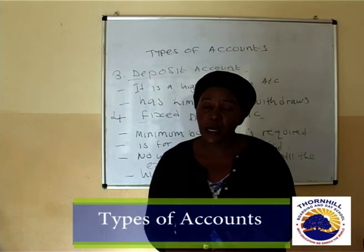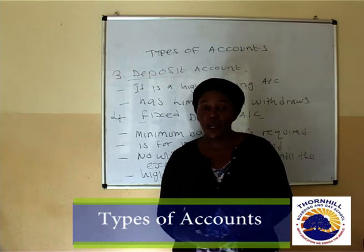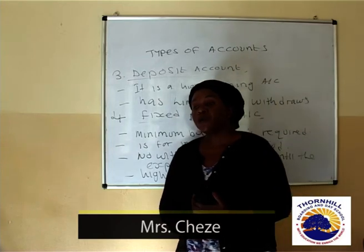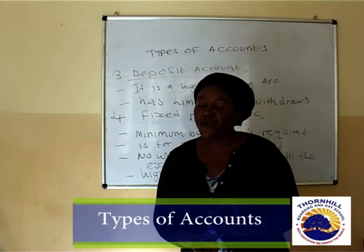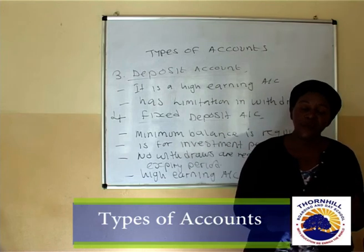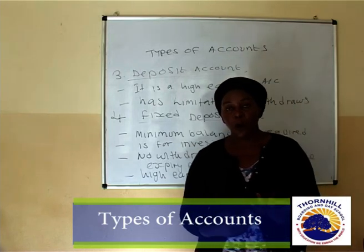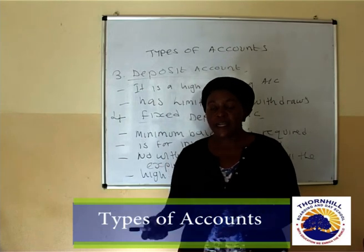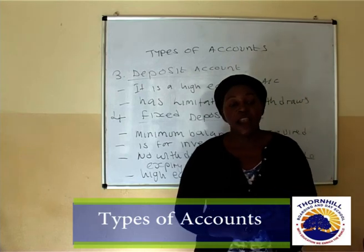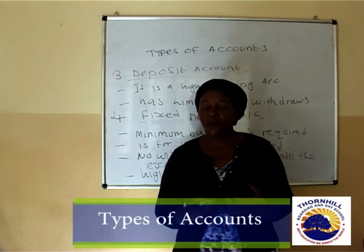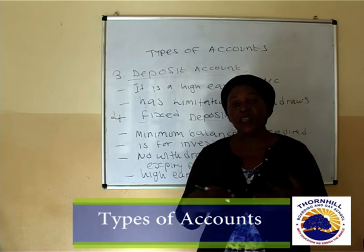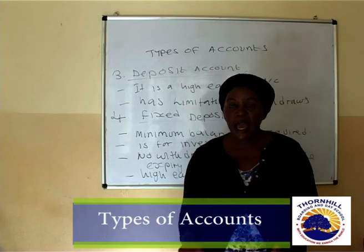Let me recap what we learned today. We looked at types of accounts: the current account, which is a non-interest-earning account; the savings account, which is an interest-earning account but with minimal interest; the deposit account, which is a high-earning interest account where you are allowed to make just one withdrawal in a quarter or in a year; and the fixed deposit account, which is also a high-earning interest account where you tell the bank how long you want to keep your money.